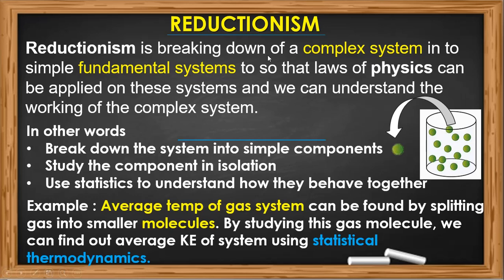In reductionism, if you want to understand a complex system, you have to break down the whole complex system into simple components and study that particular simple component, then apply statistics to study the behavior of the whole complex system. For example, take a container with gas. Gas is a very complex system because in that gas millions of gas molecules are there. We cannot study each and every molecule to study the whole complex system.